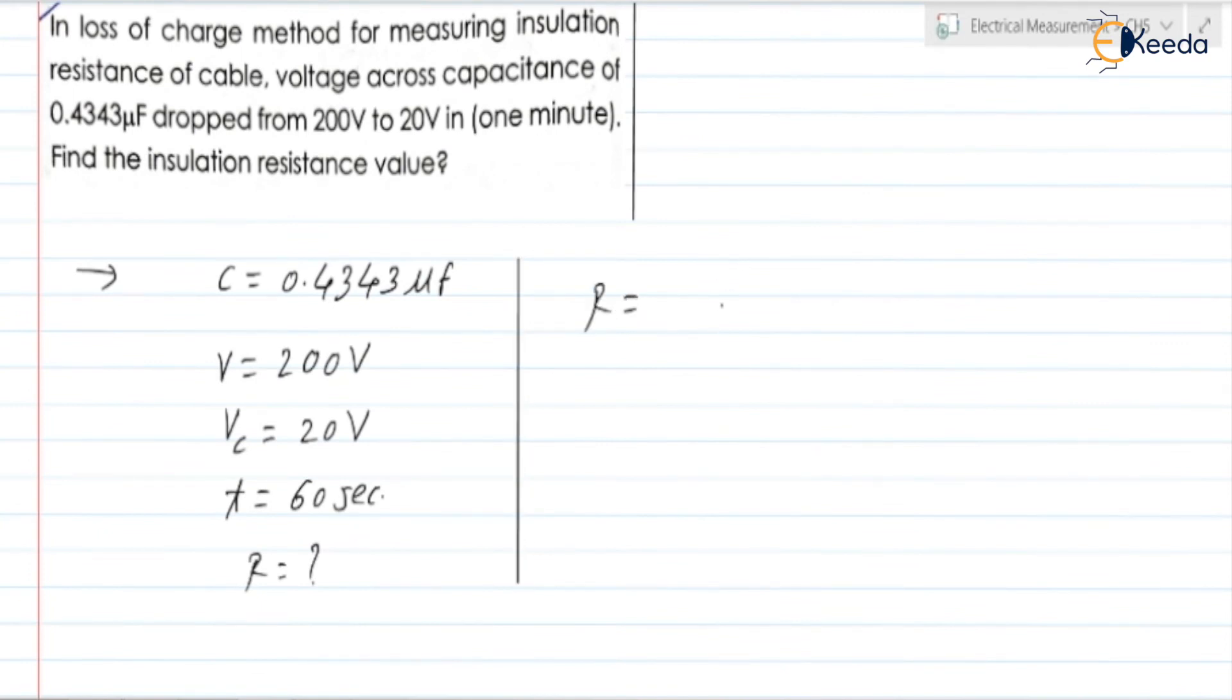We know R is equal to 0.4343 into t divided by C into log to the base 10 of V by Vc.